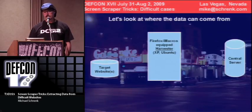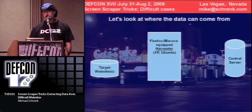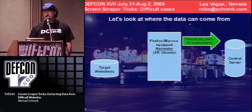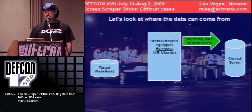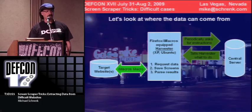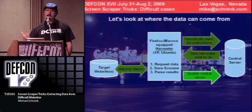This is a typical configuration for me: I have target sites on one side, then the machine running iMacros — which I call my harvester — and then some kind of central server, which is usually a website I've customized. The harvester periodically polls the central server to ask if it has anything to do. If it does, it'll tell it which websites to target and what data to apply. The harvester goes out, downloads pages, saves screens, parses results, and sends data back to the centralized server.